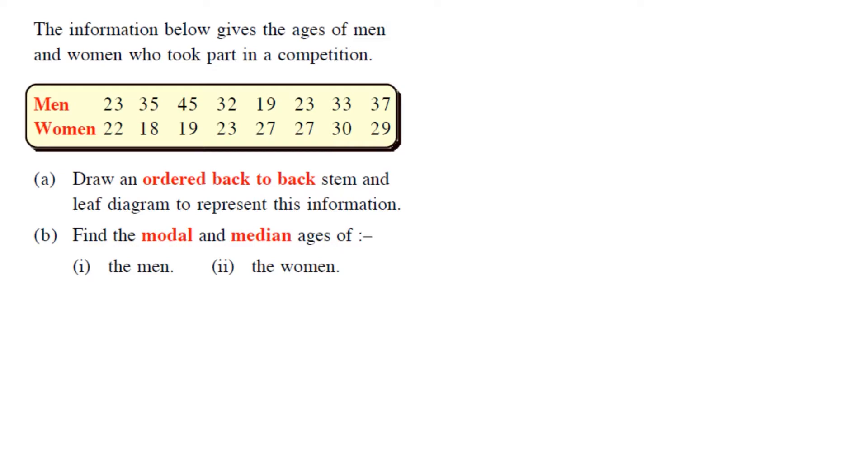So it's a little bit tricky to draw your own stem-and-leaf diagram. Mine's going to be a rough sketch, but basically for a back-to-back, you're doing two different sets of information. So here you can see information for the men, information for the women. We're going to do one on one side, one on the other. So a back-to-back stem-and-leaf diagram looks a little bit different. We've got a stem going down in the middle. So our numbers range from 10s up to the 40s. So we'll start at one, we'll go two, three, and four.